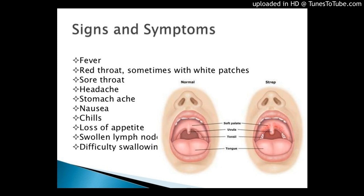Risk Factors. Most cases of group B strep disease in adults are among those who have other medical conditions that put them at increased risk, such as diabetes mellitus, cardiovascular disease, congestive heart failure, history of cancer, and obesity.